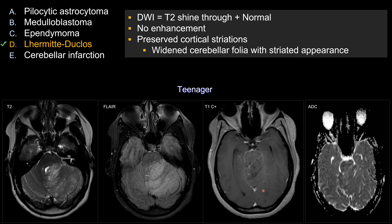On post-contrast sequence, you see no enhancing mass lesion — perhaps a slight increase in vascular enhancement, but otherwise no significant enhancement. On FLAIR and T2, you can see this dysplastic or disorganized appearance of clearly a mass lesion, yet there is preservation of cortical striation, which would be strange for other types of neoplasm. This would be a very classic appearance for Lhermitte-Duclos.